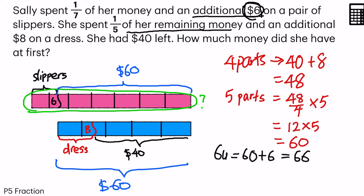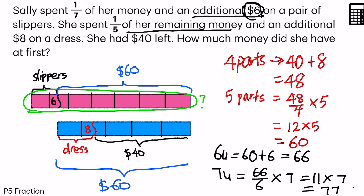The total green portion — how many units am I finding? 1, 2, 3, 4, 5, 6, 7. I am finding 7 units. So 7 units will be 66 divided by 6 to find 1 unit, then times 7. 66 divided by 6 gives me 11. 11 times 7 gives me 77. And that's my final answer.